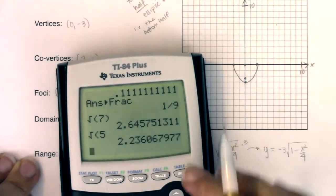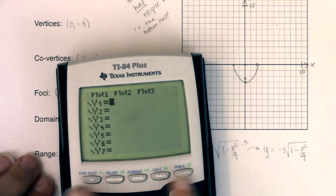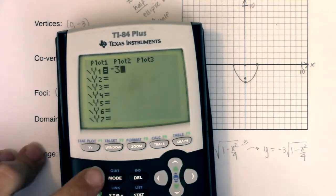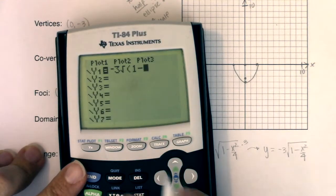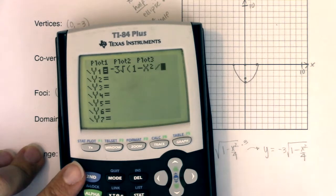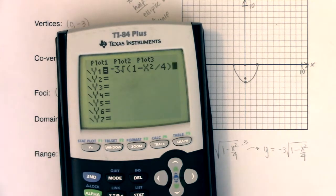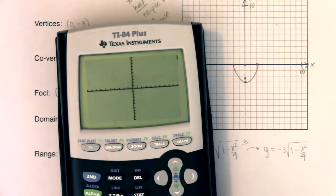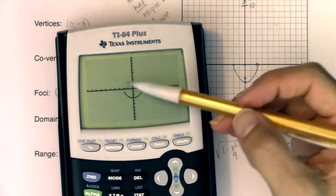And we should get something that looks like the lower half of our parabola. So here we go. Negative 3 times the square root of 1 minus x squared over 4. I'll close that parentheses. Now, I don't remember if my window was from a math or a stats problem last. So I'm going to hit zoom 6. And there it is. That's the bottom half of my parabola.